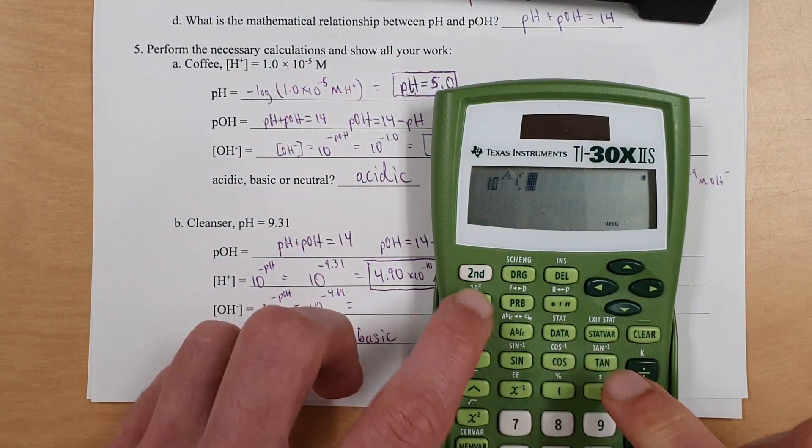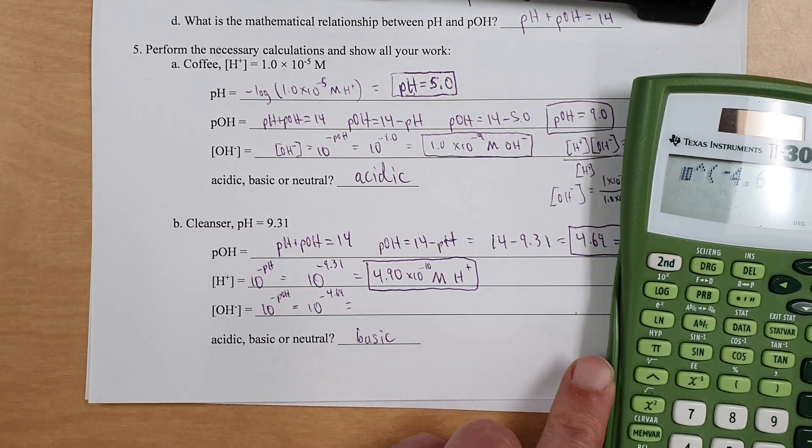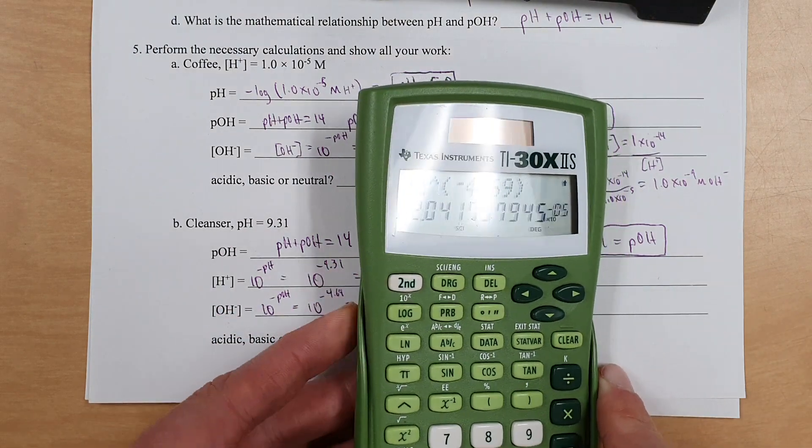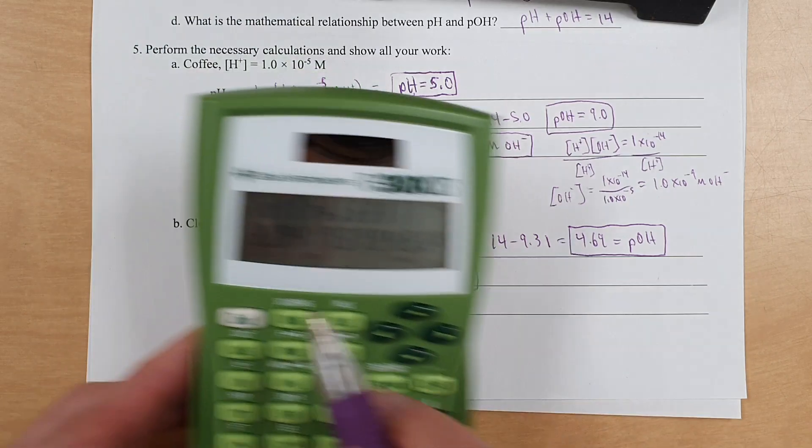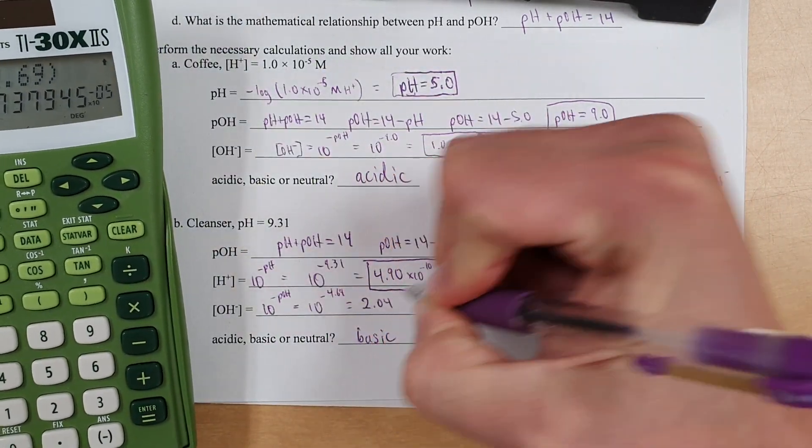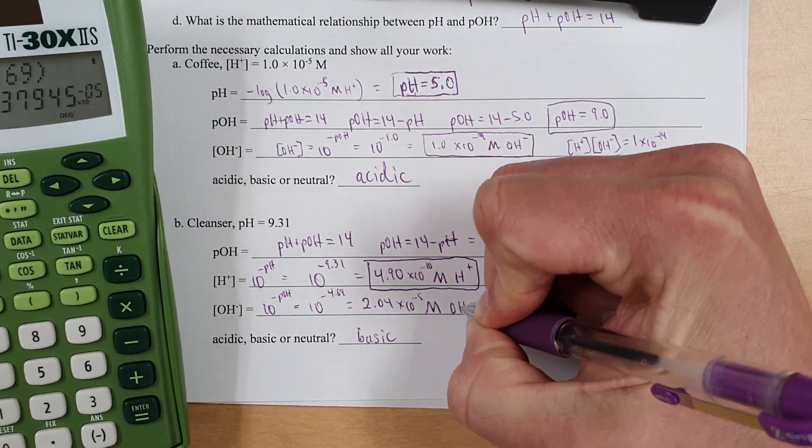And let's find out what that is. That's 10 to the negative 4.69. Just checking my numbers. And I put it in scientific notation, and it becomes that. 3 sig figs means we're going to round it to 3 sig figs. 2.04 times 10 to the negative 5th molar hydroxide ion.